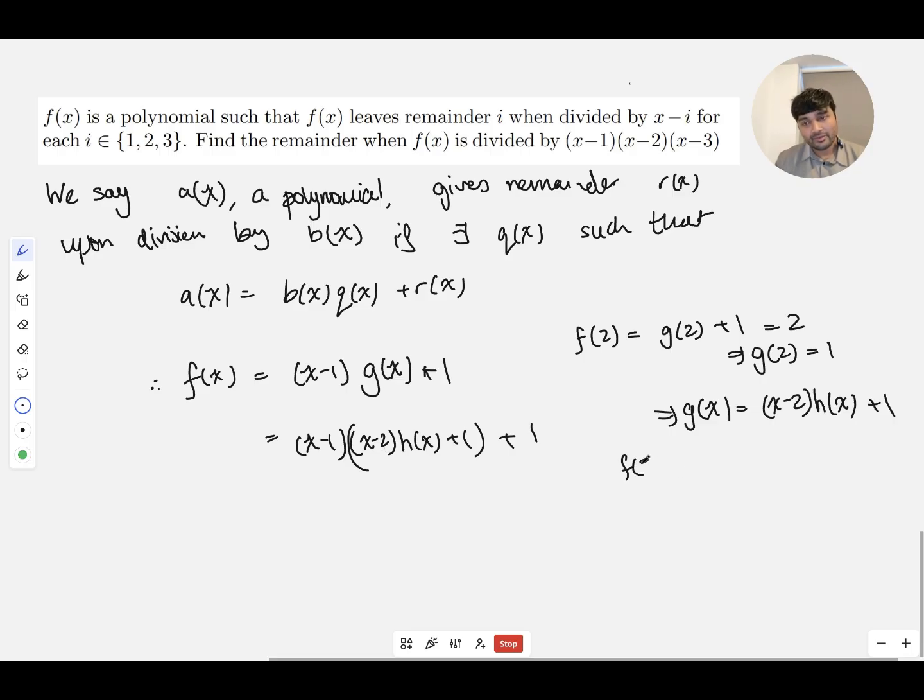So f of 3 is 3. If we plug that into here, we get (3 minus 1) is 2, times (3 minus 2), which is 1, times h of 3, plus 1, plus 1. And if we expand that out, 2 times h of 3, plus 2, plus 1 is plus 3. And that's supposed to equal 3. And so in particular, this means that h of 3 is 0.